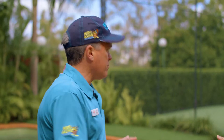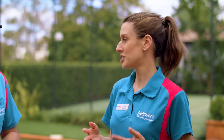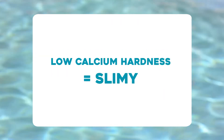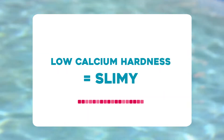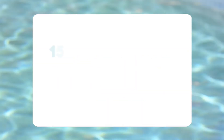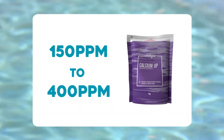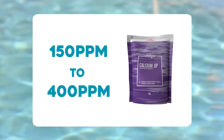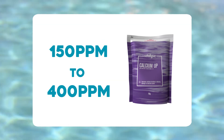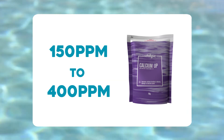And calcium — we all know calcium is important for our body, but what about calcium hardness in our pool? Calcium in our pools works to keep your pool water clean and keeps the surface of your pool in good shape. Low calcium hardness can make your pool water feel slimy and can even corrode the surface of your pool. The recommended levels of calcium hardness are between 150 and 400 ppm, and if you'd like to raise your calcium hardness levels, I recommend using Calcium Up.